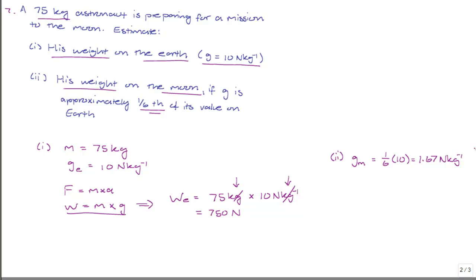we get that the weight of the astronaut on the Moon is equal to 1.67 multiplied by 75. Let me just rewrite this so that we have the mass first, followed by the gravitational acceleration. You do not need to do it. You don't always need to have mass m written before gravitational acceleration g.